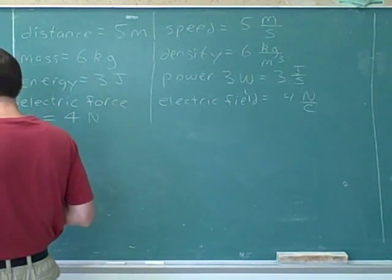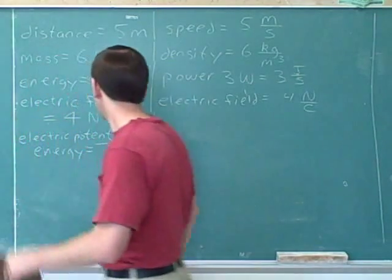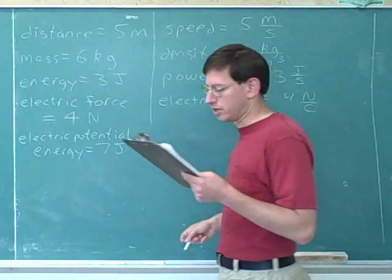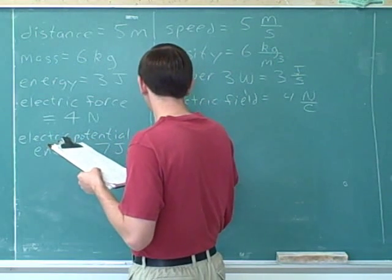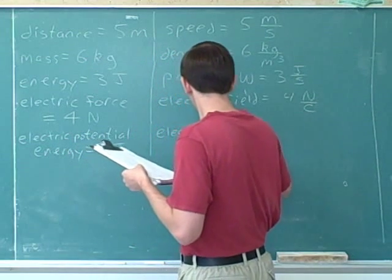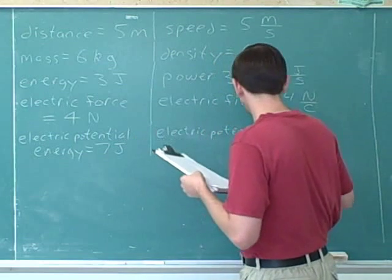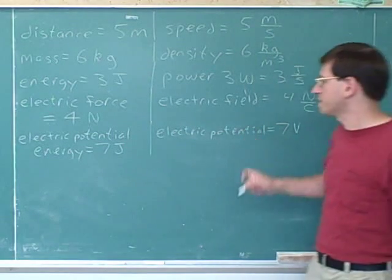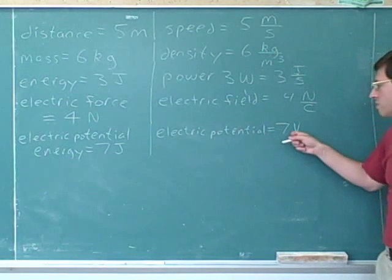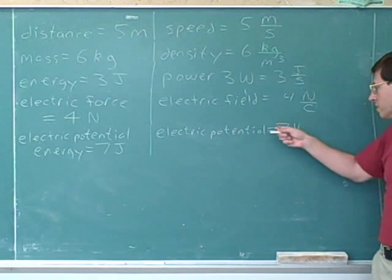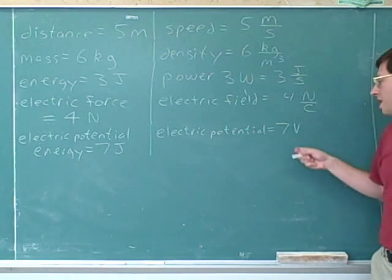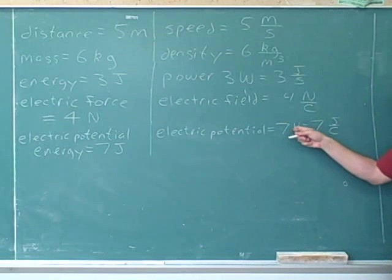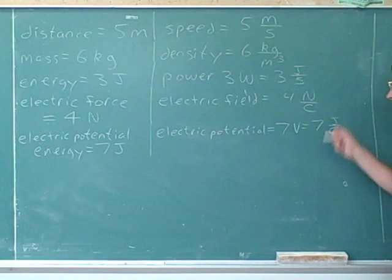We could consider an electric potential energy of seven joules. Is this a ratio unit? No — joules is not a ratio. But we could also consider an electric potential of seven volts. It turns out that electric potential is a different thing from electric potential energy. Is this a ratio unit? Well, first it looks like it's not. However, you will learn that volts are joules per coulomb, so seven volts is really seven joules per coulomb. This turns out to be a ratio unit — volts are joules per coulomb, which forms a ratio.